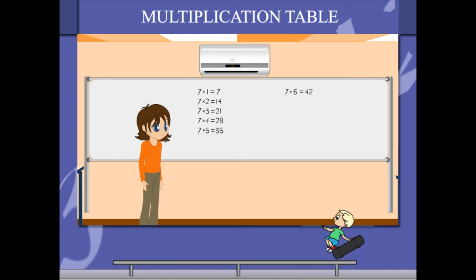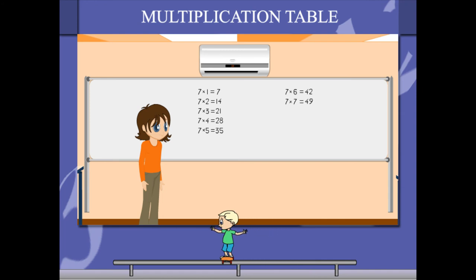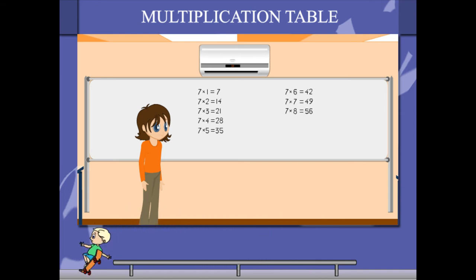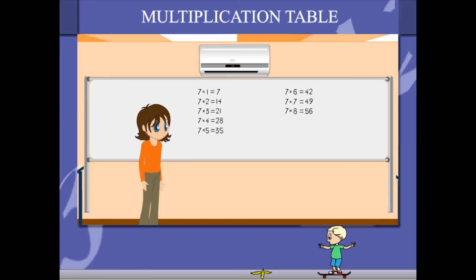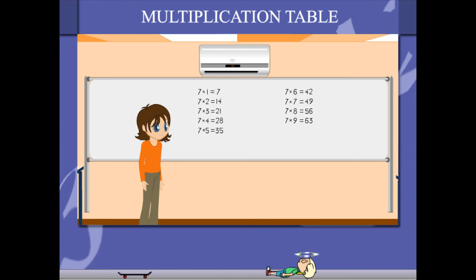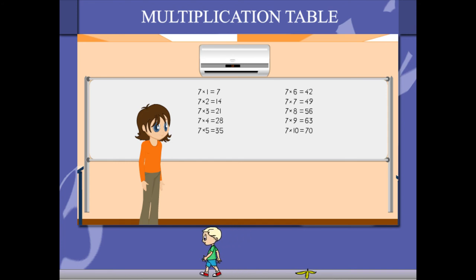7 6's are 42, 7 7's are 49, 7 8's are 56, 7 9's are 63, 7 10's are 70.